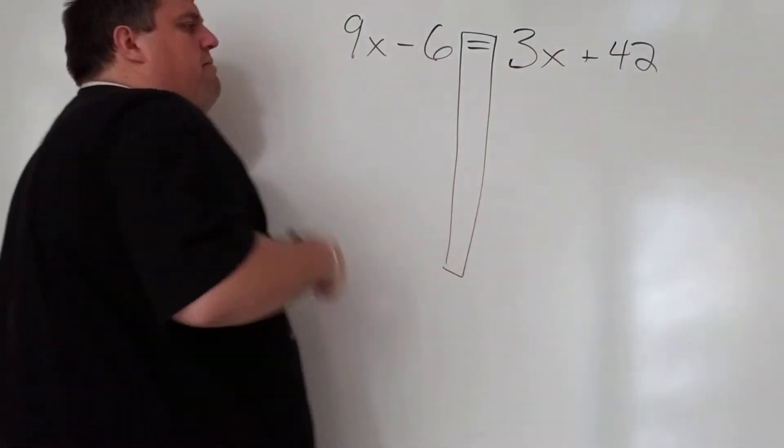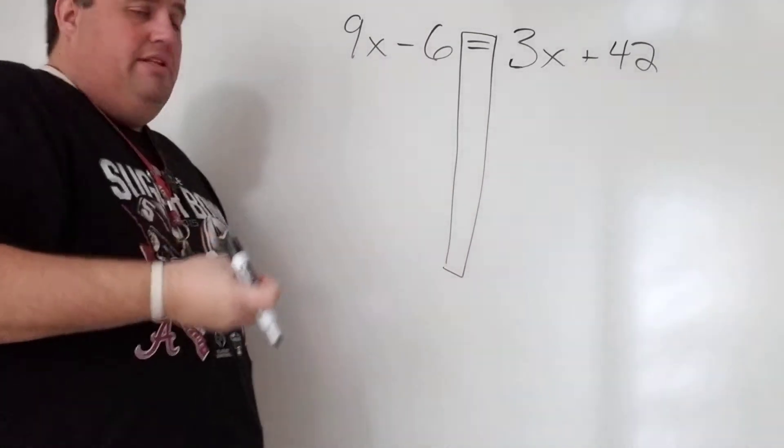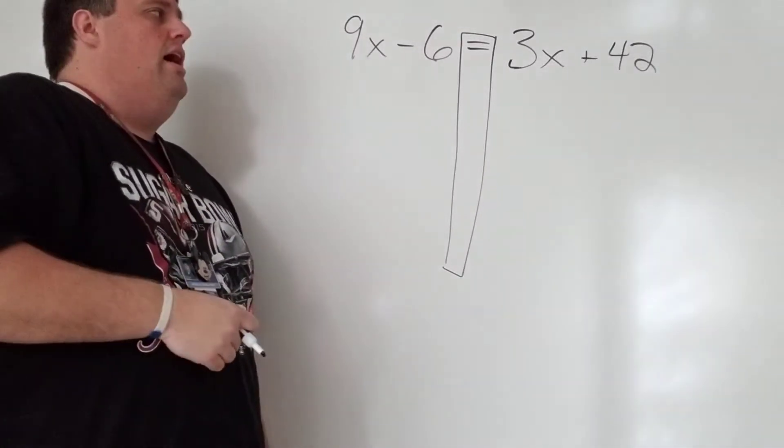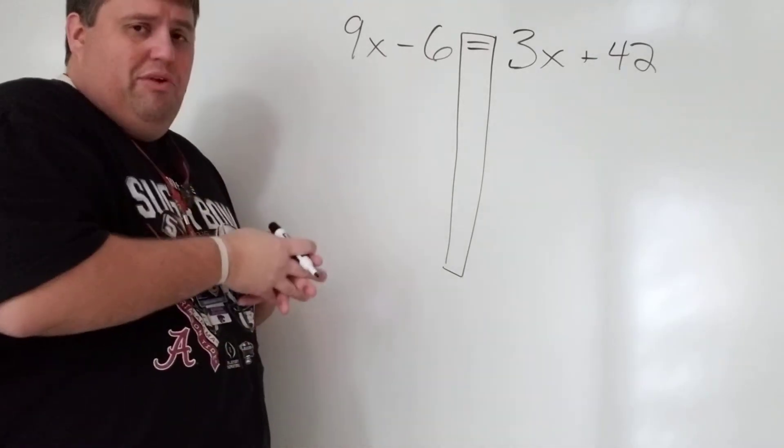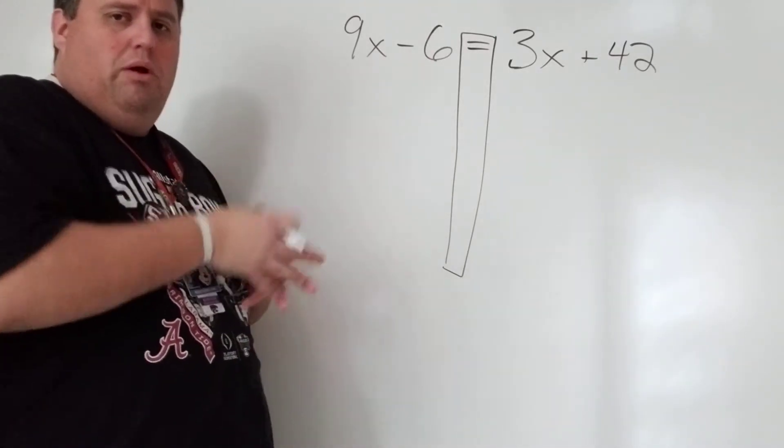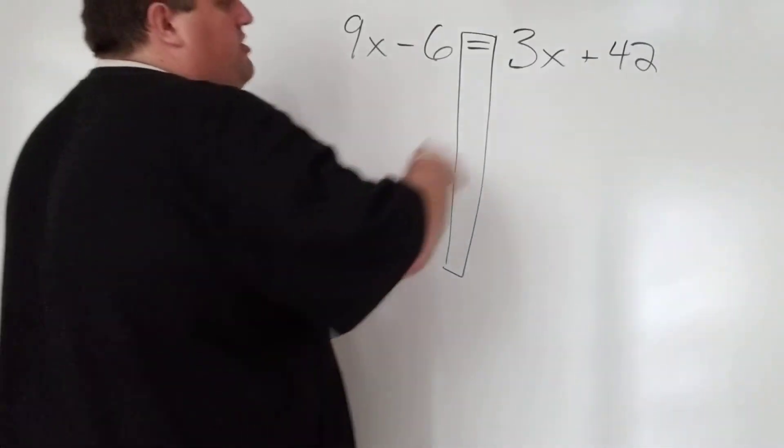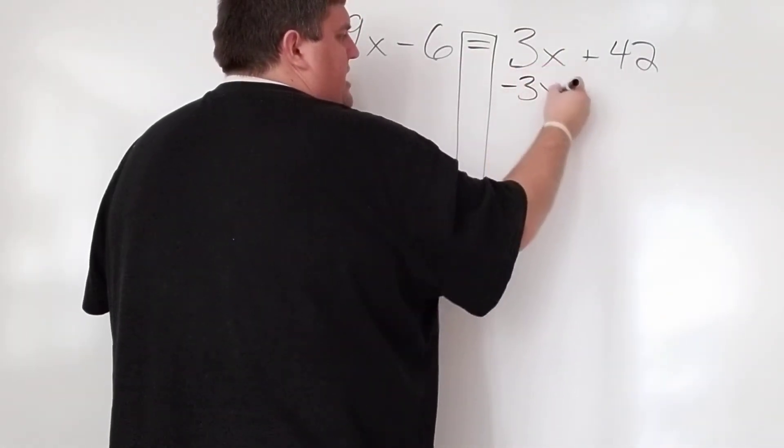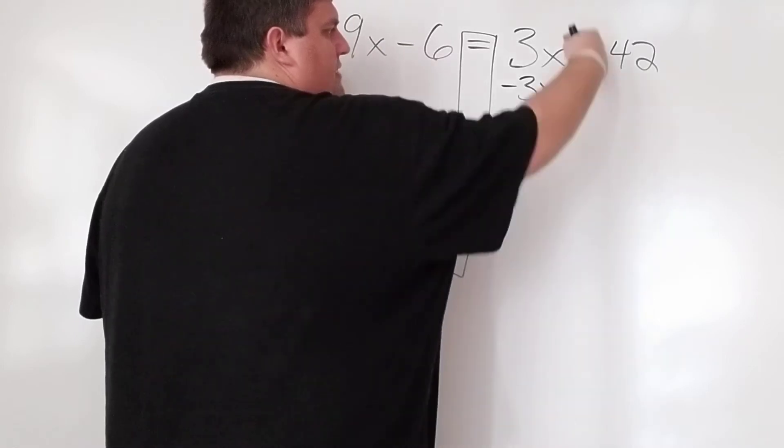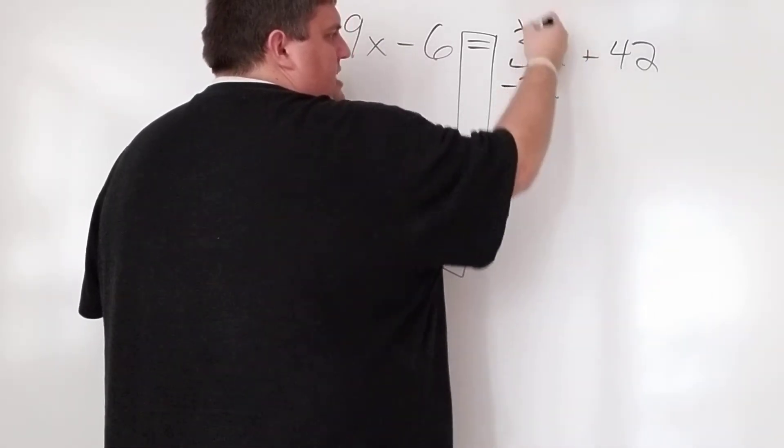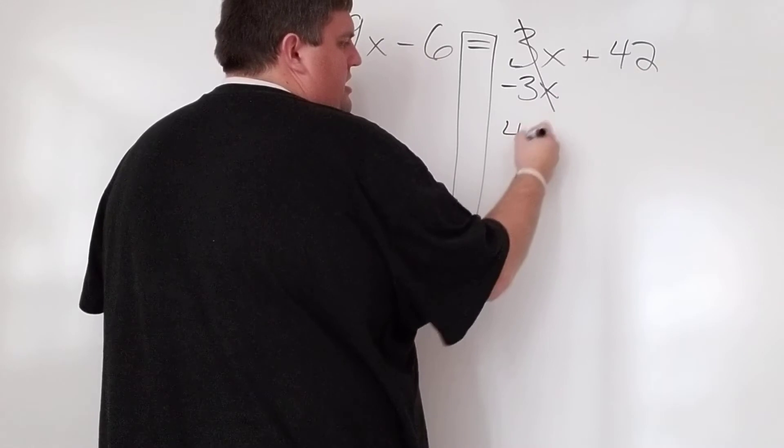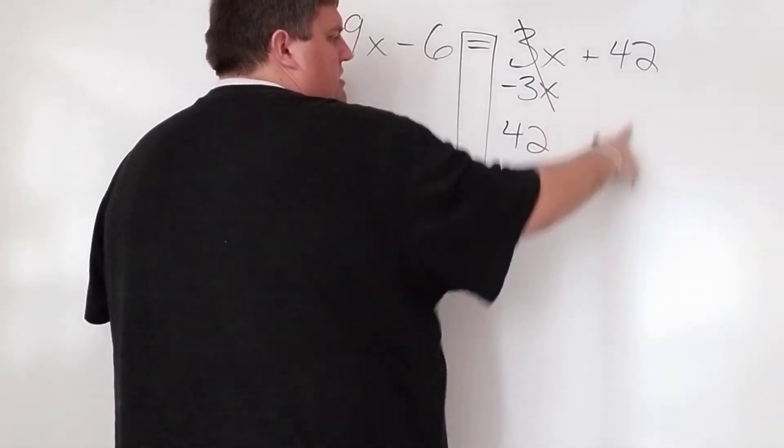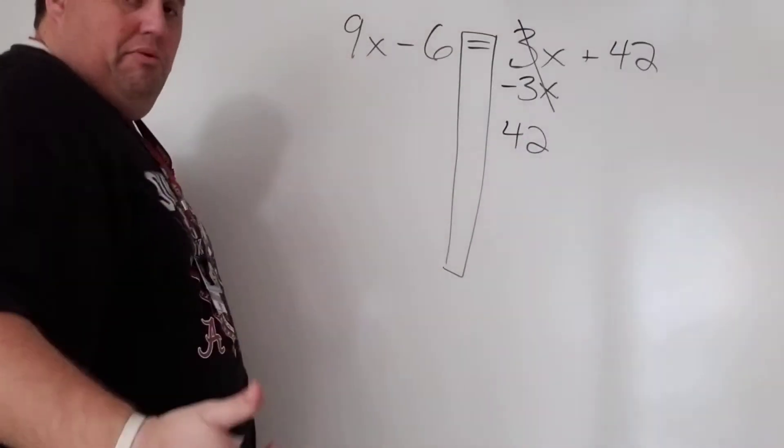Now, normally, we would get rid of the 3, we would divide. But we don't want to just get rid of 3. We want to get rid of the 3 and the x all together in one piece. So what we're going to do is we're going to take this, we're going to subtract 3x from both sides. Now, if I have 3x minus 3x, that's obviously zero. And that's just going to leave me with the 42 that's over here, which is great.